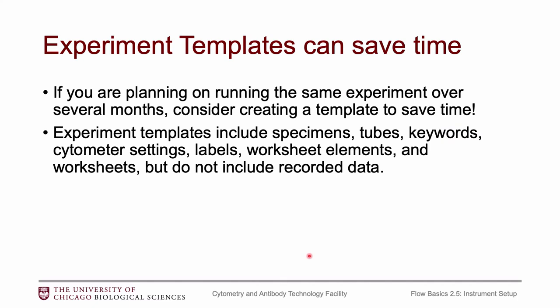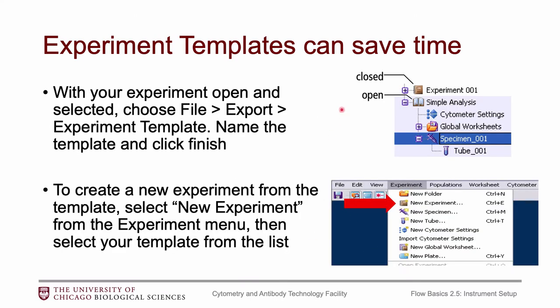Once you have all of that set up, I recommend creating an experiment template if this is something you'll be running repeatedly. You can generate a template by right-clicking the experiment or going to file export to export the experiment template. There's a little wizard — just click through and name your template. When you want to start a new experiment using the template, go to the experiment menu, select new experiment, and a window with your template list will open. If you have any questions about anything I've discussed while sitting at the cytometer, feel free to grab any of the staff for help.